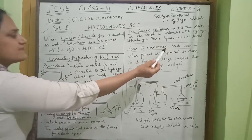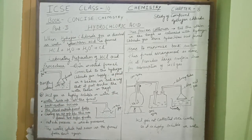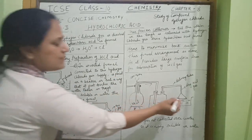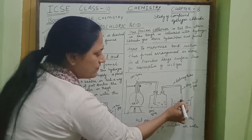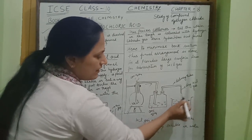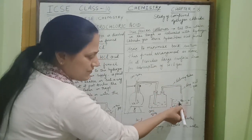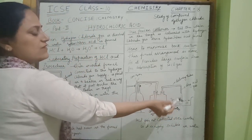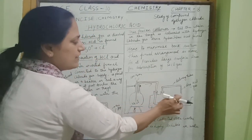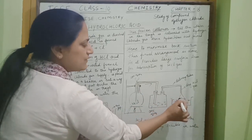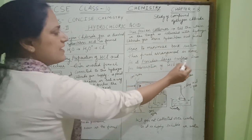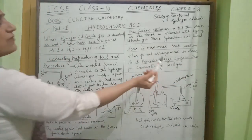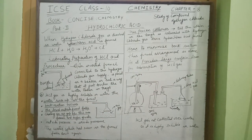The funnel arrangement is used to minimize back suction. If the gas were collected simply through a narrow delivery tube, when the hydrogen chloride gas dissolves in water there would be back suction. To prevent this, the funnel arrangement is used, as it provides a large surface area for the absorption of hydrogen chloride gas, allowing us to obtain hydrochloric acid.